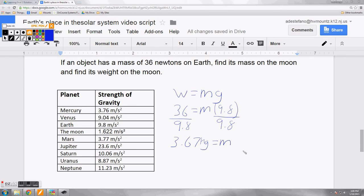And we also know that mass will never change regardless of gravity. So we already know the mass of this object on the moon will be 3.67 kilograms. All we need to do now is find the weight. So we know that weight must be equal to 3.67 kilograms times, if you look at the gravity on the moon, it is 1.62 meters per second squared. So if we do multiplication, we get the weight of this object on the moon to be 5.95 newtons.